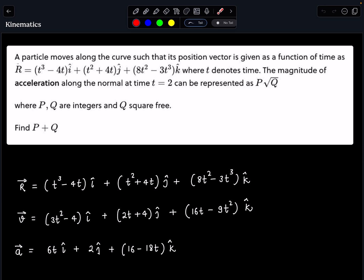So the problem statement is a particle moves along a curve such that its position vector r is given as a function of time. So vector r is given to us where t denotes the time. The magnitude of acceleration along the normal at time t equal to 2 can be represented as P√Q where P and Q are integers and Q is square free. That means further square we cannot take and we have to find P plus Q.